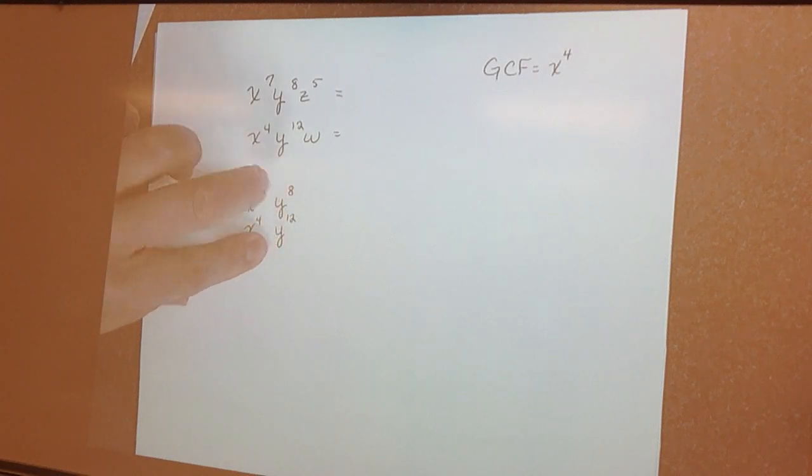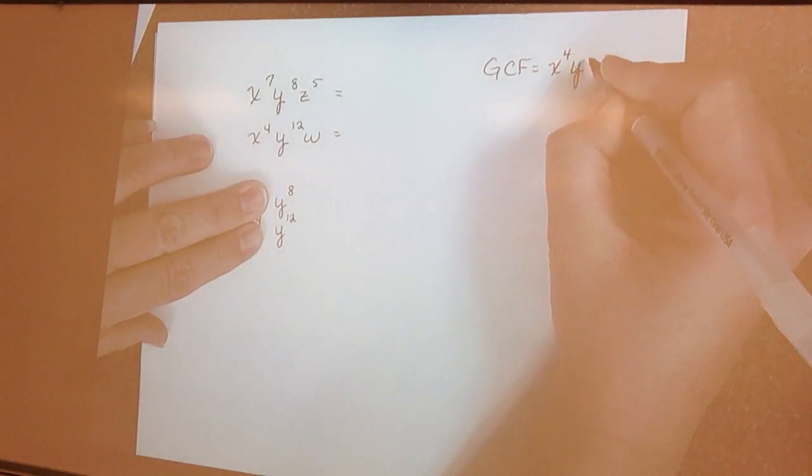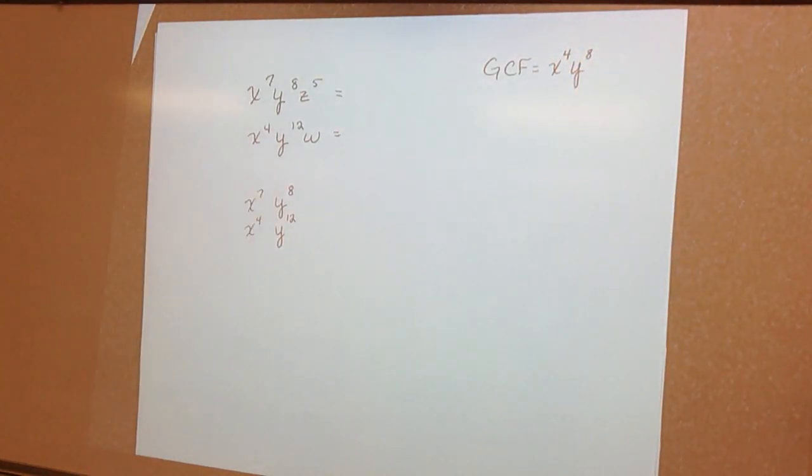Y to the 8th, Y to the 12th. How many Y's do they have in common? They have 8 in common. So the GCF of this would be X to the 4th, Y to the 8th. Remember, greatest common factor, we're only looking at what they have in common.